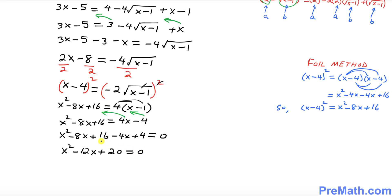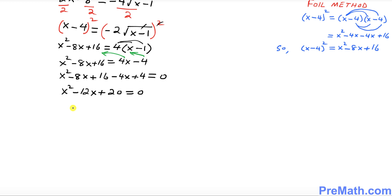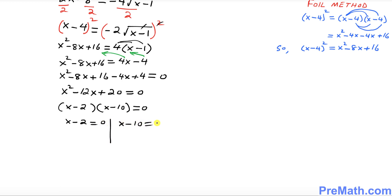This is a quadratic equation that can be easily factored. The factors are (x minus 2)(x minus 10) equals zero. Setting each factor to zero: x minus 2 equals 0 gives x equals 2, and x minus 10 equals 0 gives x equals 10.